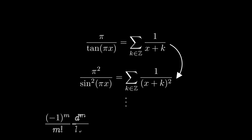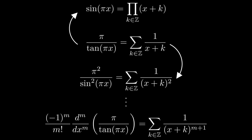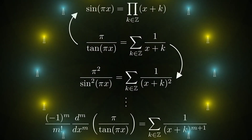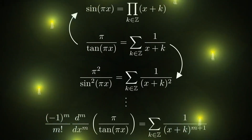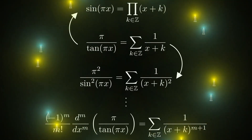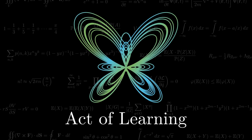Now that we have this series representation of π/tan(πx), we can differentiate with respect to x to get the inverse sum of squares result from the first half of the video. In fact, we can continue differentiating to get a very general equation for the inverse sum of m-th powers. In the other direction, we can integrate the series representation of π/tan(πx) to get the famous product series for sin(πx). Hope you enjoyed the discussion — thanks for joining me and see you in the next video.